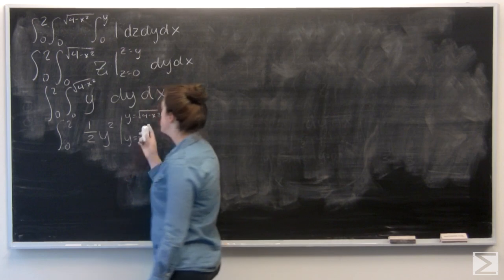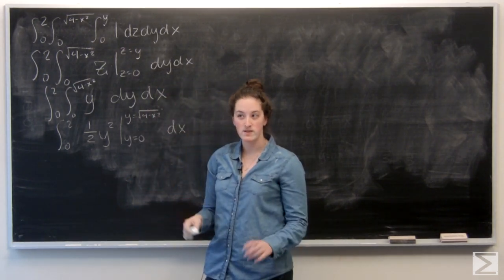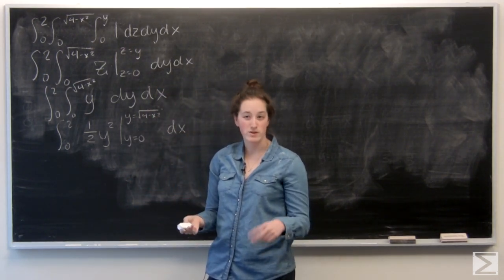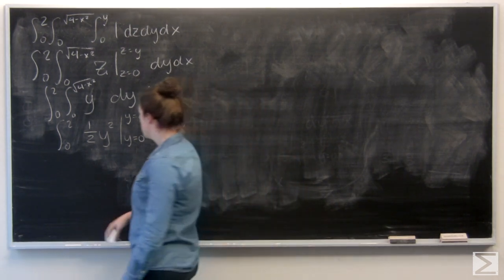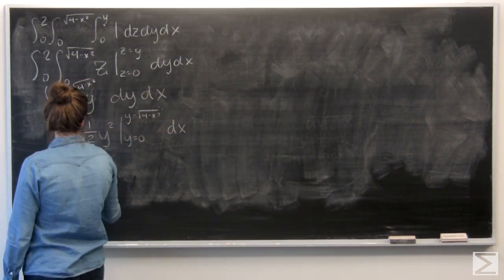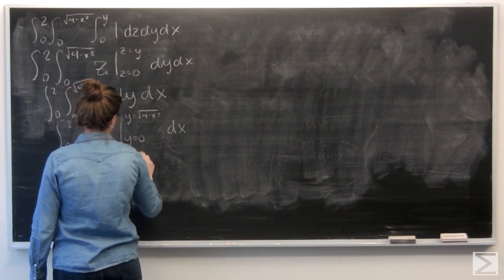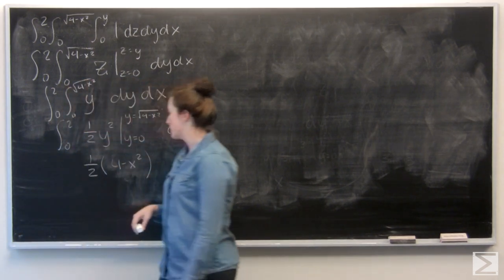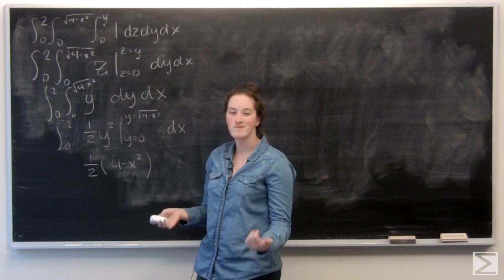And I want to evaluate that from 0 to the square root of 4 minus x squared. So when I plug in the square root of 4 minus x squared, I'm going to square it. And the square root and the square cancel each other out. So, I have 1 half times 4 minus x squared. And then for y equals 0, that drops out.